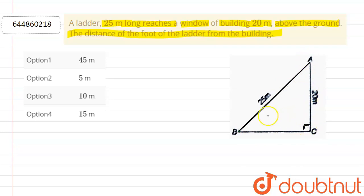So by using Pythagoras theorem, we get hypotenuse squared equals the sum of the squares of the other two sides. We get AB² = AC² + BC².